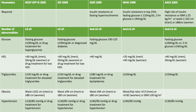Meanwhile, the IDF considers these parameters — at least three of the following: fasting glucose of more than 100 mg per deciliter or diagnosed diabetes; less than 40 mg per deciliter of HDL for men, or 50 mg per deciliter for women, or drug treatment for low HDL; more than 150 mg per deciliter of triglycerides, or drug treatment for elevated triglycerides.